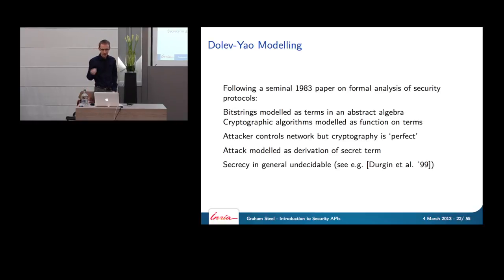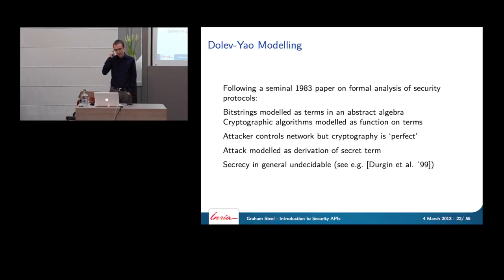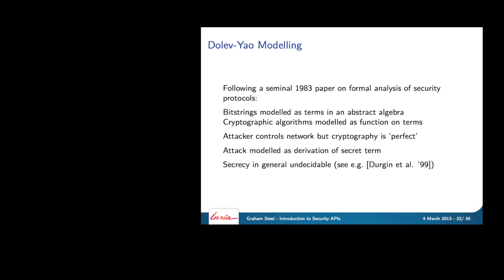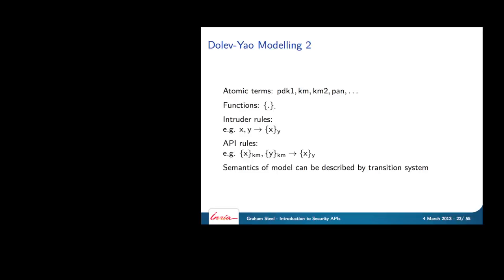We let the attacker control the network but assume cryptography is perfect — either you have the key and can decrypt, or you don't and you can't. We model an attack on secrecy as the derivation of a secret term in our abstract algebra. We define derivation rules and then try to solve: is it possible to derive this secret term? It's easy to show that in a general model secrecy is an undecidable problem, though the constructions used to show undecidability don't really resemble realistic cryptographic systems.